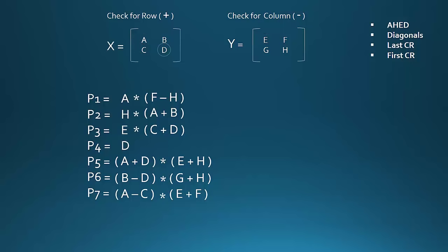Now consider P4. The element of P4 is D, and the opposite element is H. Since we are in Y, so we will consider a column, and the opposite column is GE. And since it is a column we will write G minus E.